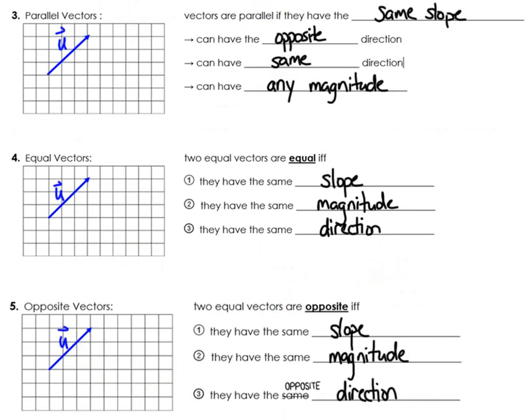Okay so moving on parallel vectors, equal vectors and opposite vectors. This is how we compare vectors. So a parallel vector I have vector u up there and what I'm going to do is I'm going to draw a parallel vector so obviously I'm going to draw something that is parallel. Those two right there are going to be written as vector u is parallel to vector v. Notice that as long as they have the same slope it really doesn't matter if they're going in opposite directions. It doesn't matter if they're going in the same direction or even that they're different lengths or magnitudes as long as they're parallel.